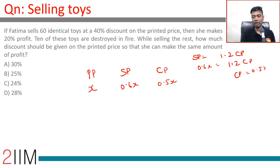10 of those toys are destroyed in fire. While selling the rest, how much discount should be given on the printed price so that she can make the exact same amount of profit?